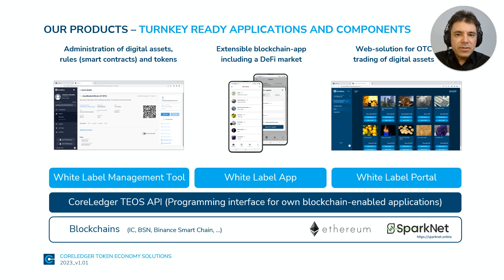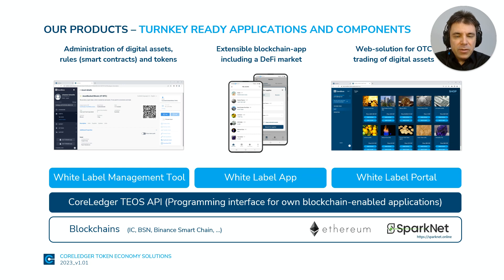How does the platform look like? You see three layers. The lowest layer is the blockchain infrastructure. TEOS means Token Economy Operating System — an operating system for blockchain functions, which functions I explain in a different video.